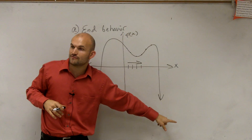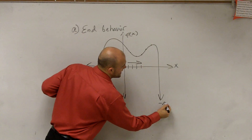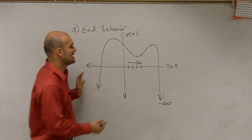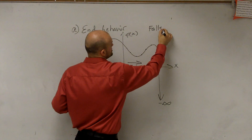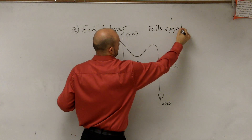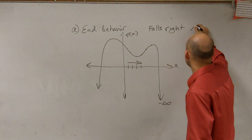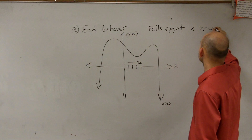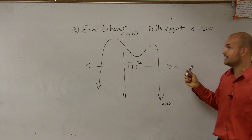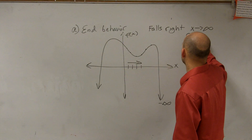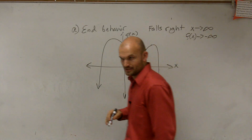Down — they go all the way down to negative infinity. So the graph falls right. More mathematically, we say: as the x-coordinates approach infinity, my f(x) output coordinates approach negative infinity.